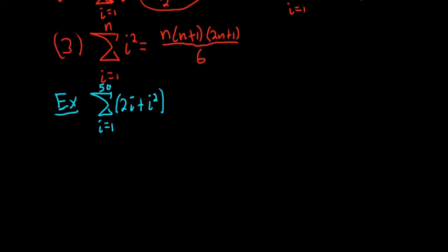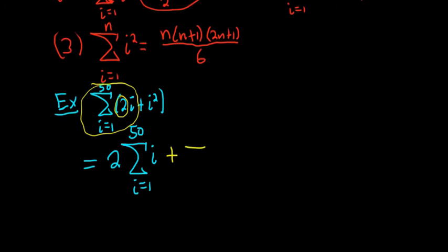You can pull out anything that doesn't have an i. So you can write this as 2 times the sum as i runs from 1 to 50 of i, that's this piece here, plus the sum as i runs from 1 to 50 of i squared. We have the same thing except we pulled out the 2 and we broke them up because there's a plus sign.